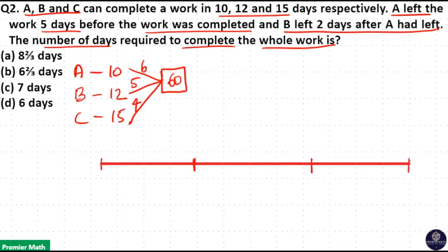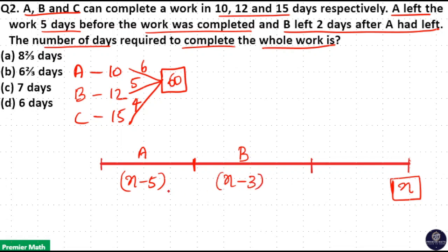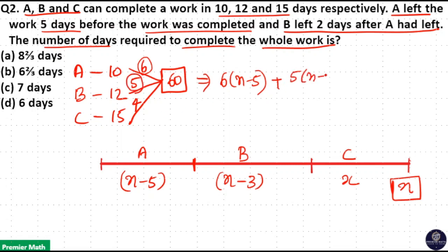You can also do this a different way. Let X be the total number of days to complete the work. Then A left 5 days before the work, so A worked for X minus 5 days. B left 2 days after A had left, so B worked for X minus 3 days, because 5 minus 2 is 3. And C worked for the whole X days. Total work is 60, so: 6(X − 5) + 5(X − 3) + 4X = 60.